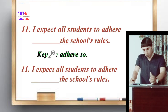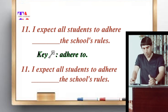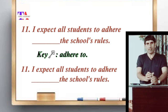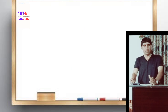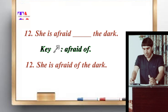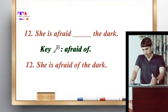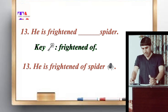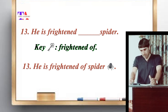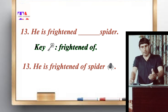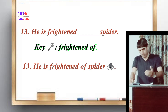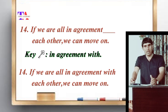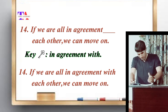Sentence number eleven: 'I expect all students to adhere to the school's rules.' The word 'adhere' takes the preposition 'to' — adhere to. Number twelve: 'She is afraid of the dog.' Afraid takes the preposition 'of' — afraid of. Number thirteen: 'He is frightened of spiders.' Same as 'afraid', the word 'frightened' also takes the preposition 'of' — frightened of.